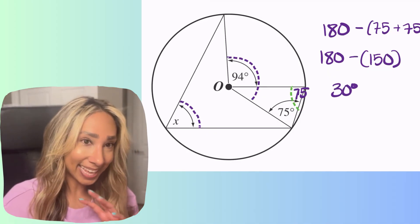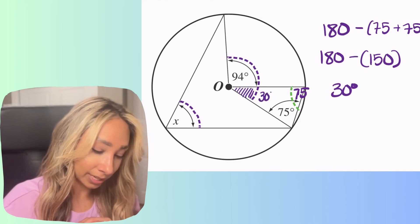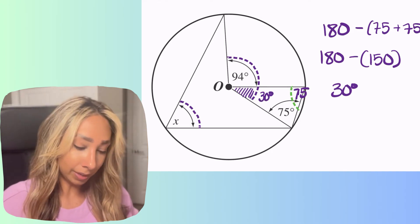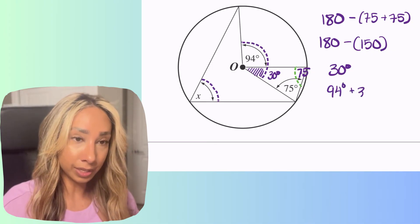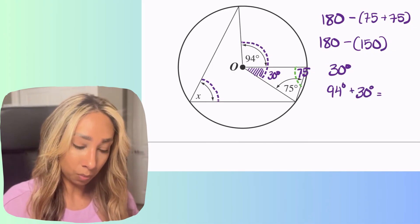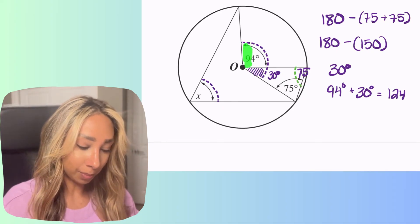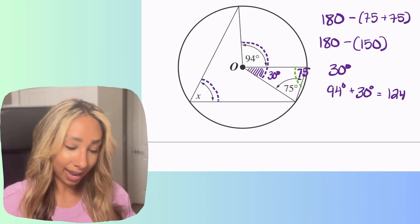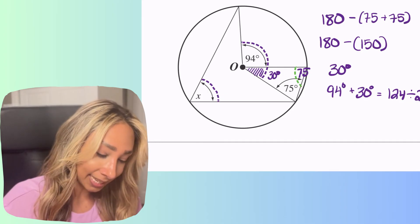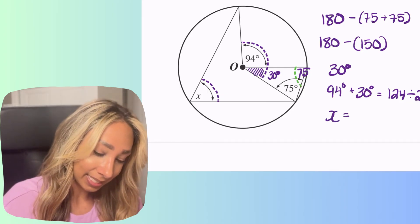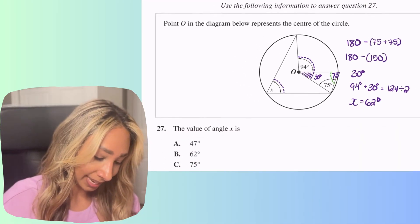So that means this angle here, this missing portion here is 30 degrees. So we can combine those together 94 degrees plus 30 degrees, that's going to give me 124. All right so now we know that this portion from here to here is 124, we can divide that in half or basically divide it by 2 and that's going to tell me that x is equal to 62 degrees. So the answer for this one here is 62.